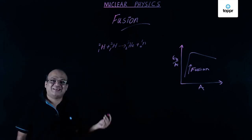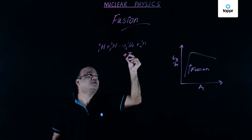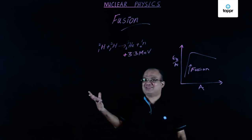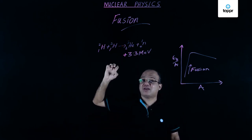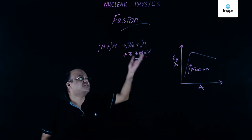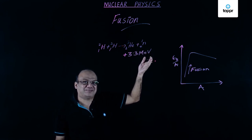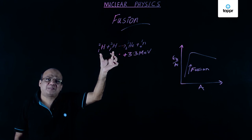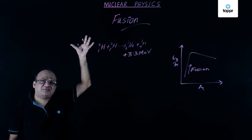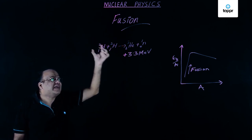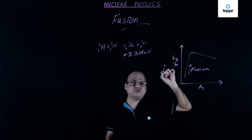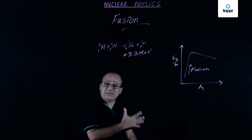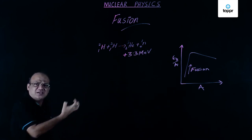In the deuterium-deuterium fusion reaction we get 3.3 MeV of energy. You might think that is less than the 200 MeV from fission, but look at the mass of the deuterium nuclei involved compared to uranium-235. The energy released per unit mass in fusion is actually more than the energy released per unit mass in fission.